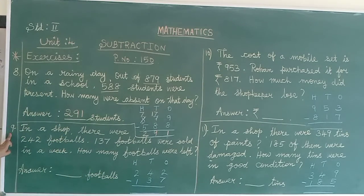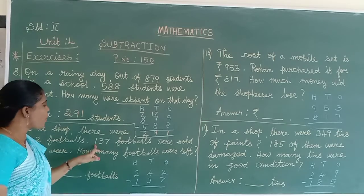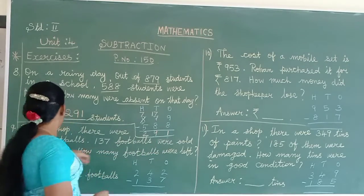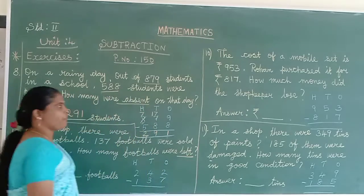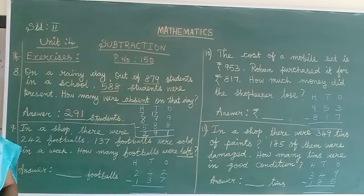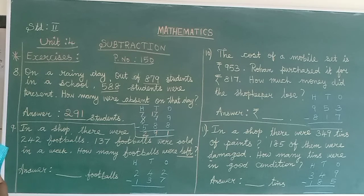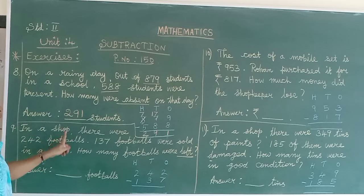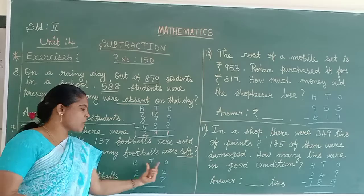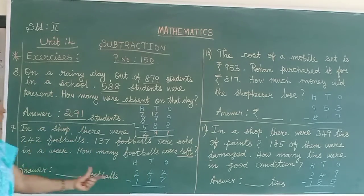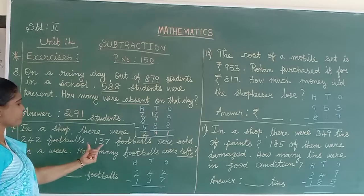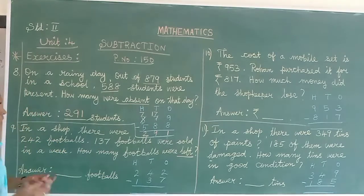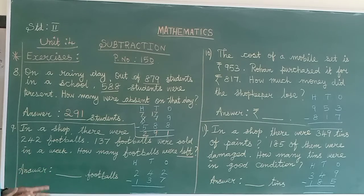Come to next sum. In a shop there were 242 footballs. 137 footballs were sold in a week. How many footballs were left? What is the left difference? Then one part is there, another part they will ask means we should do subtraction. How many total footballs in a shop? You can write in columns.